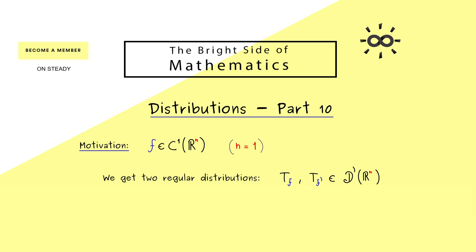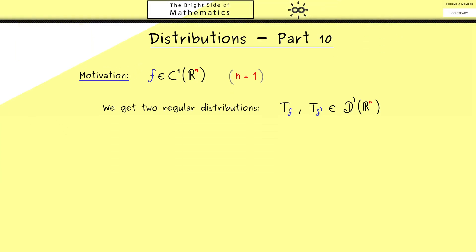Now I want to do a very important calculation in the theory of distributions: we look at what happens when we apply T_{f'} to a test function phi using the duality pairing. This is simply T_{f'} applied to phi, and the result is a real number. Because we have a regular distribution, this is nothing else than an integral of f' times phi — not a complicated integral since we are one-dimensional in our example.